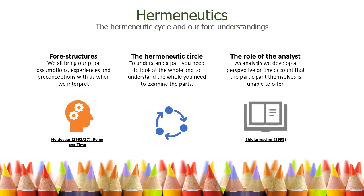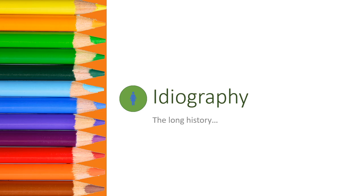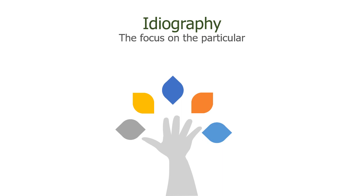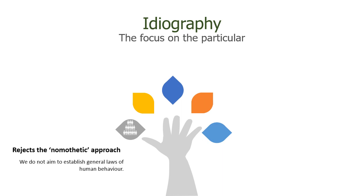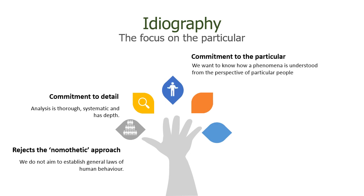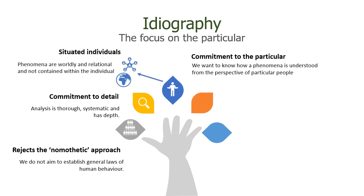In this way, our analysis provides added value to the accounts themselves. The final key influence for IPA is idiography. When we use IPA, we are not concerned with making claims about groups or populations or establishing general laws of human behaviour. IPA has a commitment to the particular. This occurs in two ways: firstly, a commitment to detail, in which analysis is thorough, systematic and captures the depth of an experience; and secondly, a commitment to understanding particular phenomena such as events, processes or relationships from the perspective of particular people. We are interested in embodied and situated perspectives. We must always remember that we are situated beings and therefore the phenomena are embedded in the physical world and our relationships with others. So the phenomena and sense making explored are not properties of the individual but are instead insights into the perspectives on the relationship to and involvement in the phenomena of interest.